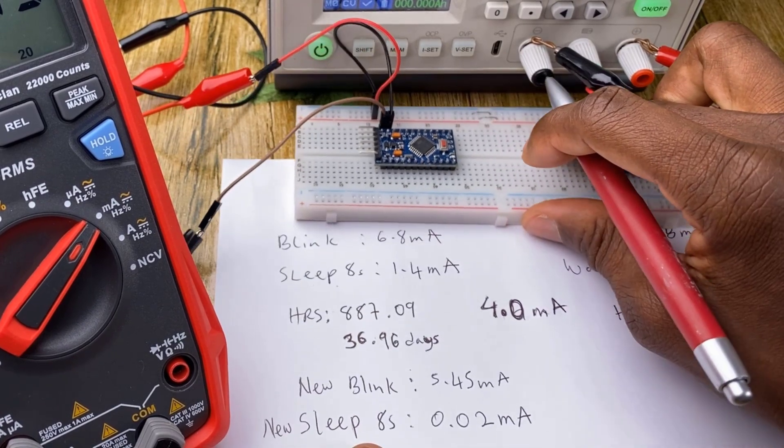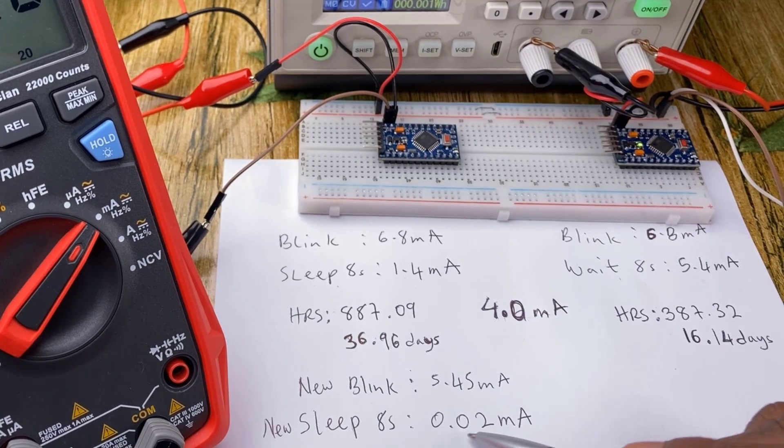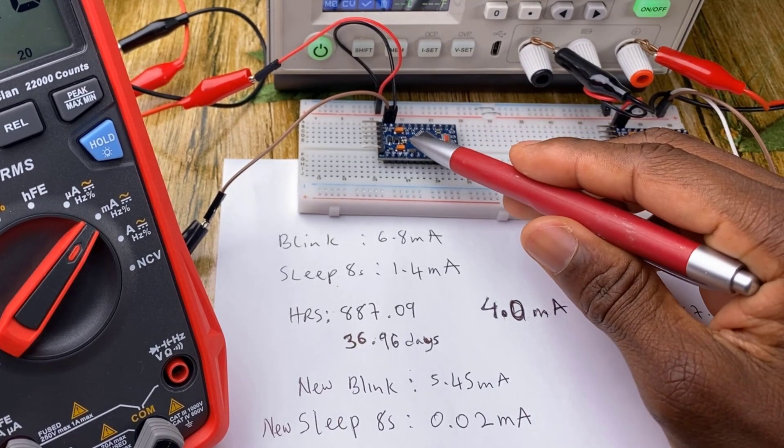So we can see the significant jump between the 1.4 milliamp it was initially drawing to 0.02 just by removing the onboard LED.